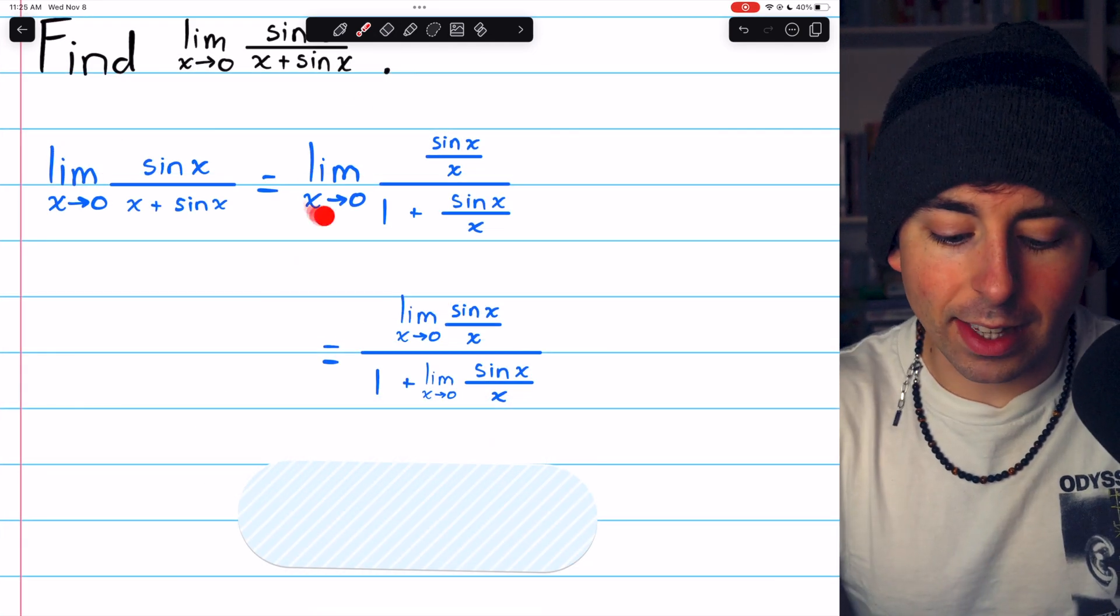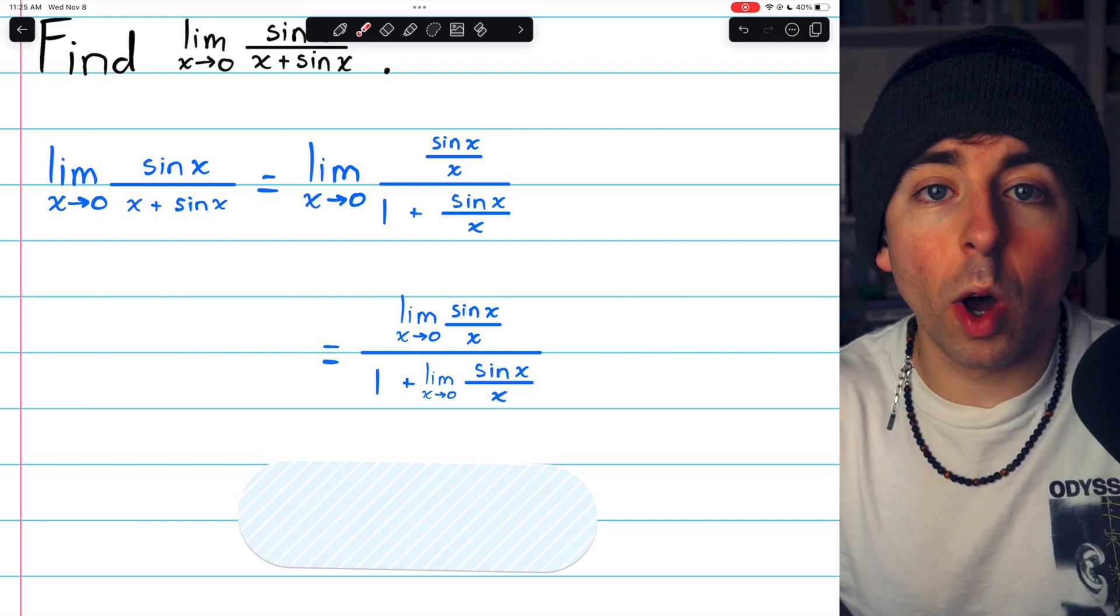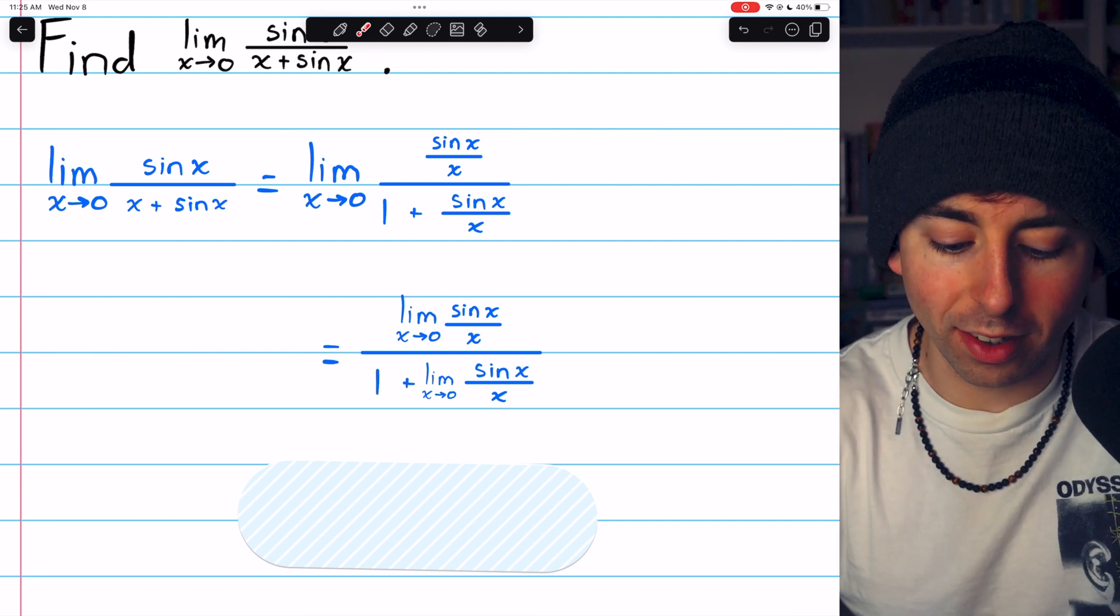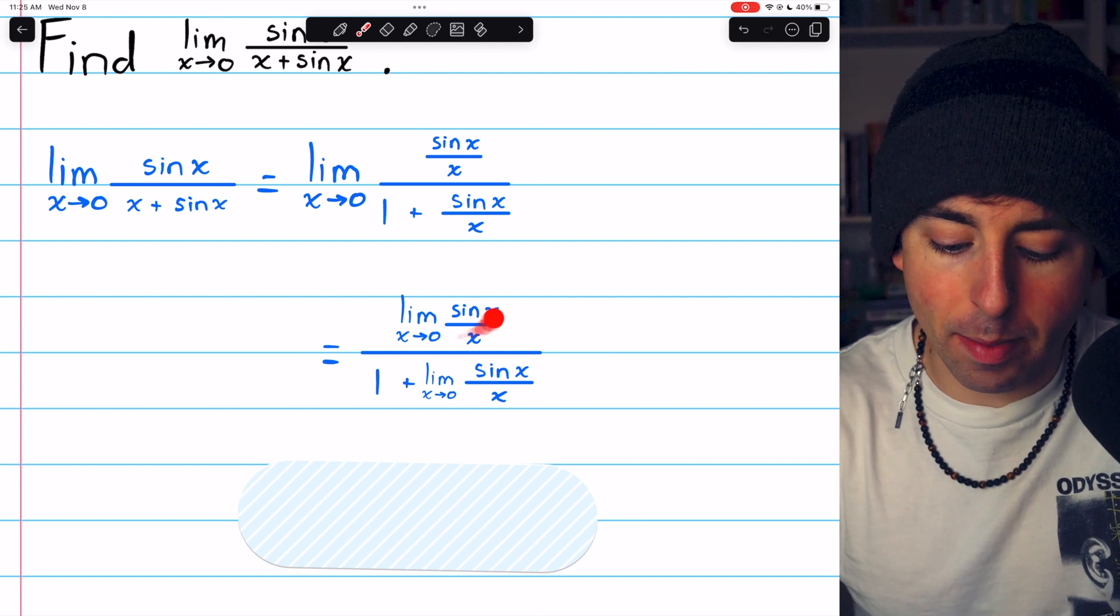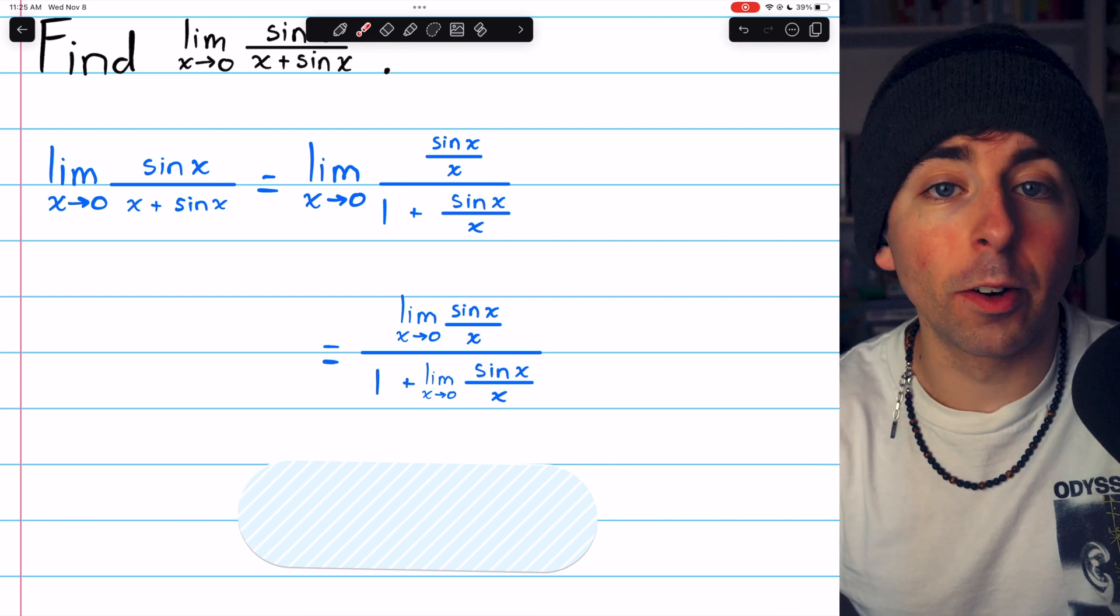In the next step, we take the limit operator into the fraction. We don't need to apply it to the one because one is not affected by x approaching zero, but we will have the limit of sine x over x as x approaches zero in the numerator and in the denominator as well.